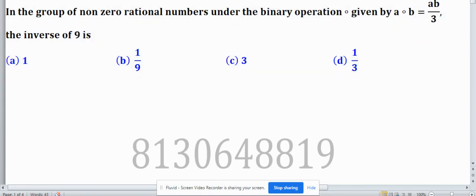To find the inverse of this element 9, first we should know what is the identity of this group. This group is Q nonzero, so exclude 0, and with this binary operation this forms a group where the binary operation on two elements is defined as ab/3.